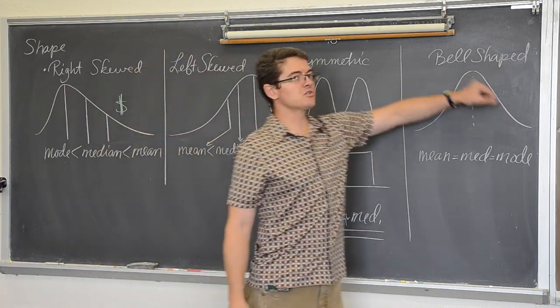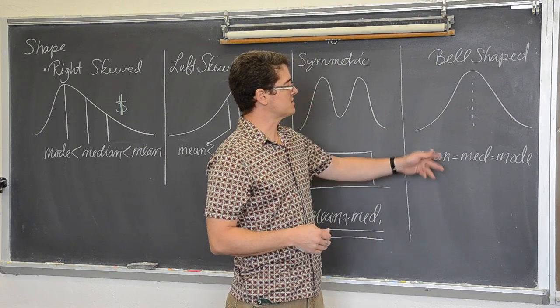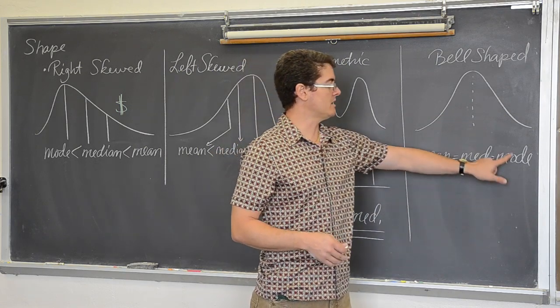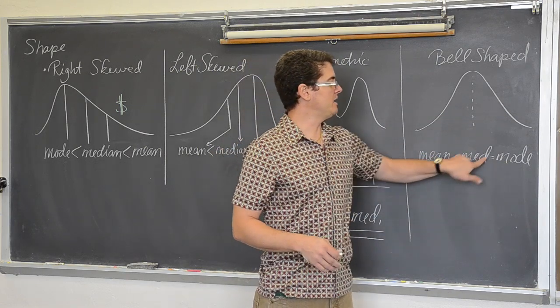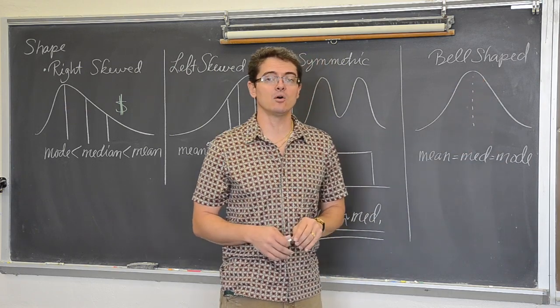And then finally with the bell shaped curve, that is when you are looking at the mean, the median, and the mode. I abbreviated that one. Mean, median, and mode are all exactly the same number right in the center of that bell curve.